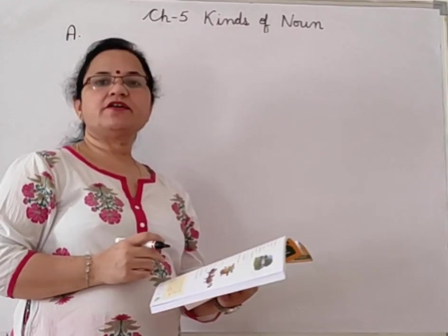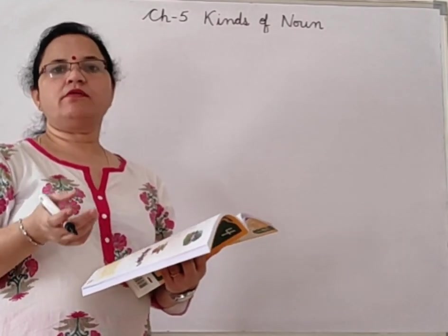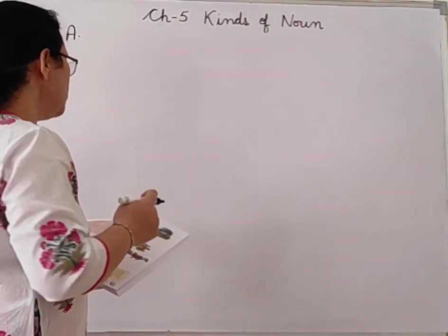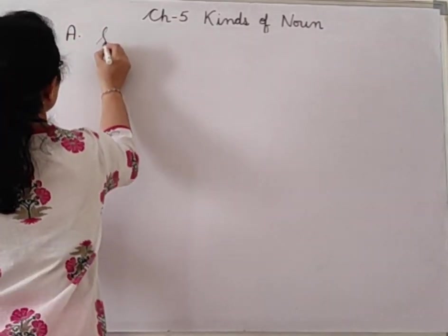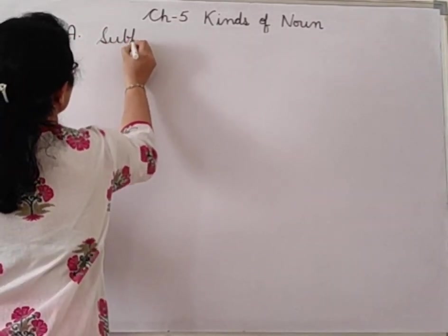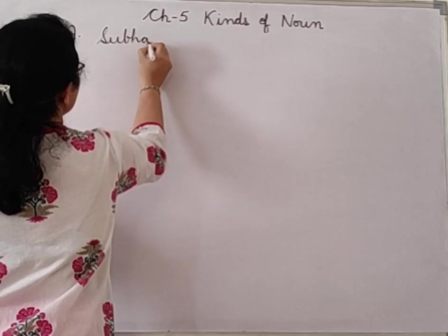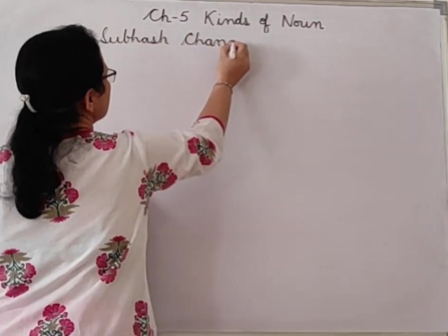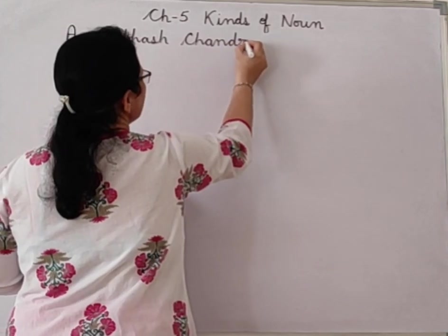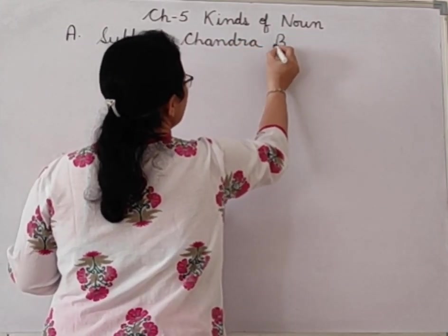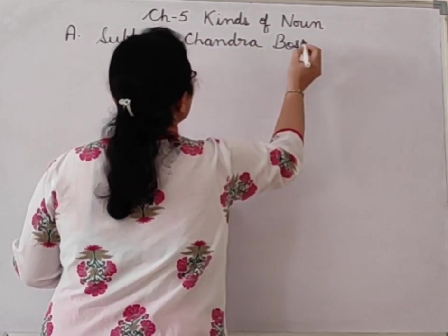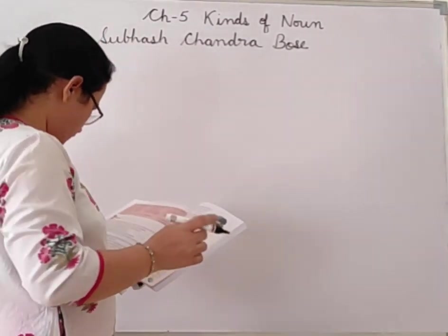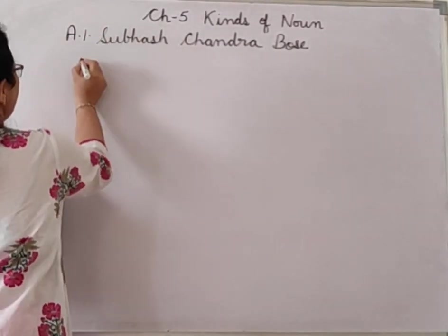First: 'Dash was a freedom fighter.' You can write any one name here. Suppose I am writing Subhash Chandra Bose. So: Subhash Chandra Bose was a freedom fighter.